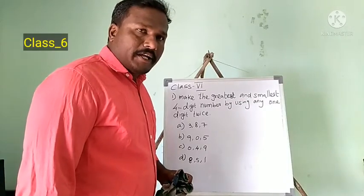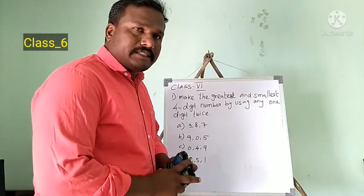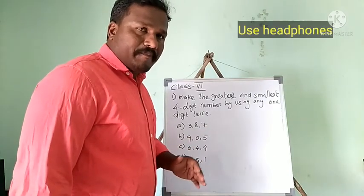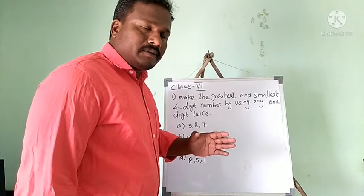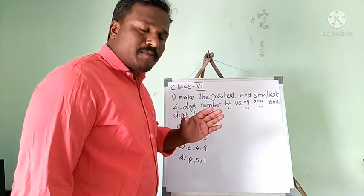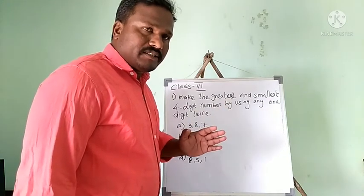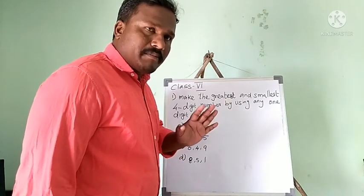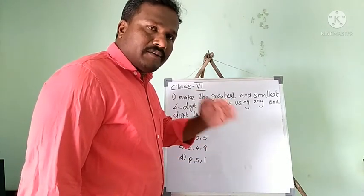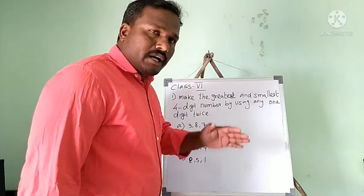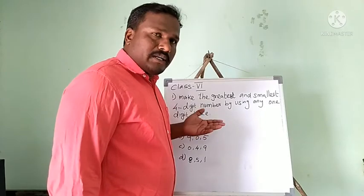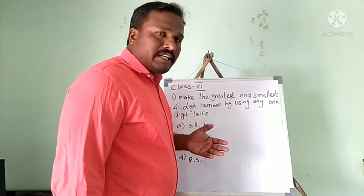Welcome friends, today we will discuss one more important topic on making numbers. In the last video we talked about how to make the greatest and smallest four-digit number from a given four-digit number. I gave some homework — I hope you all finished it. Please finish and send it to me on WhatsApp. Today we will go on to another task for making a four-digit number.